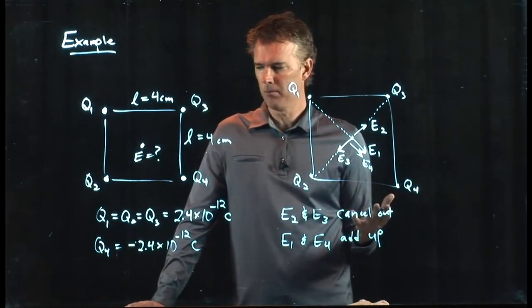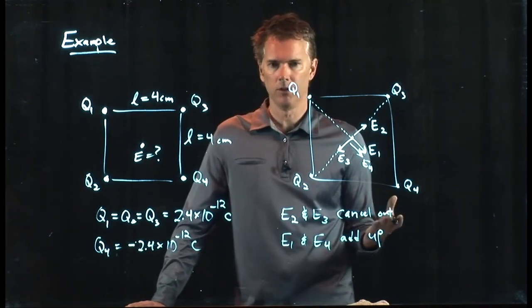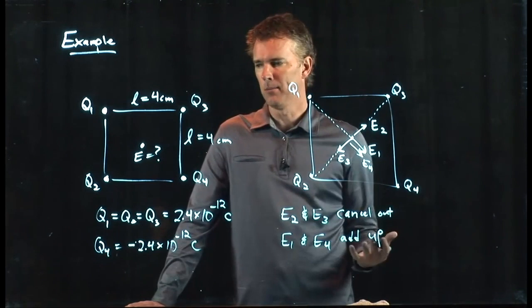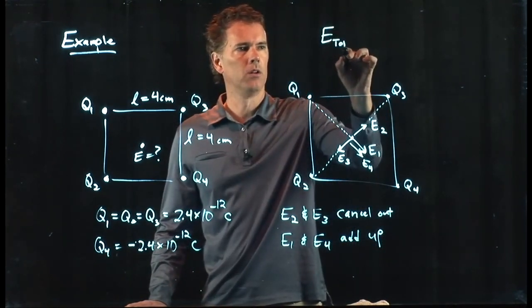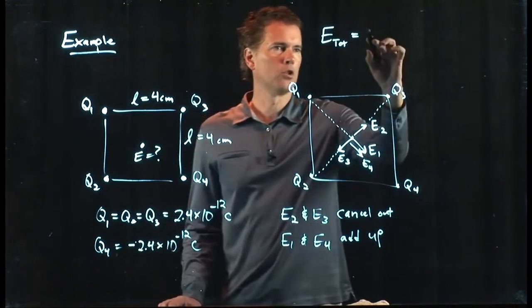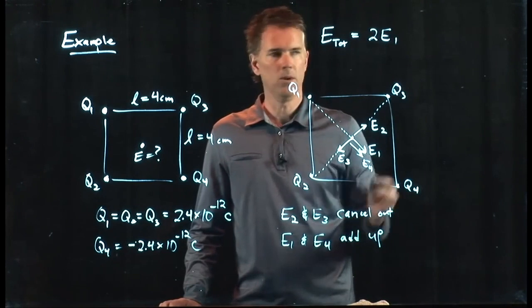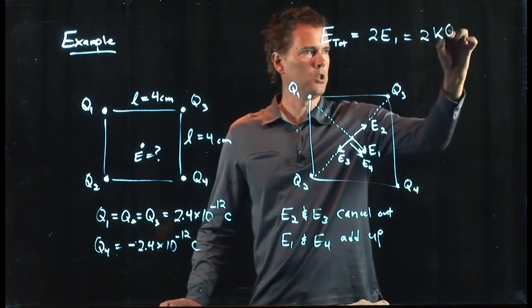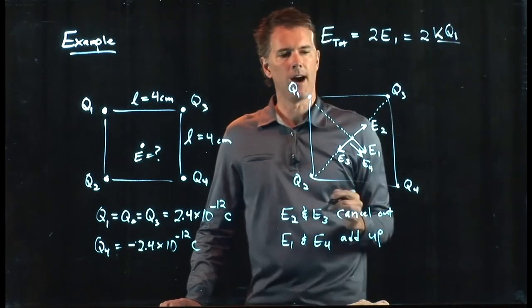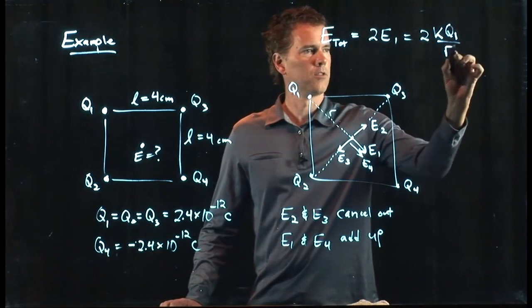And so now the problem is really simple. All we have to do is calculate the electric field due to one of them and double it. What is E total? It's just twice E1, and we know what E1 is: it's k q1 divided by this distance r squared.